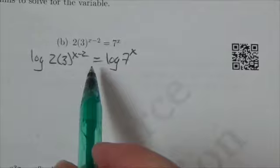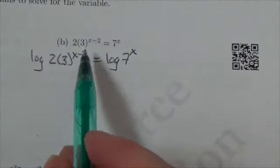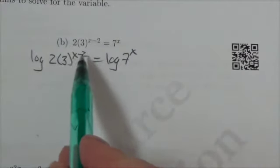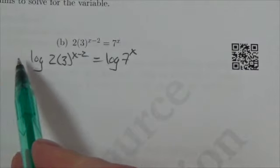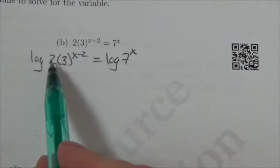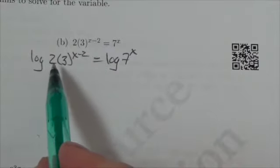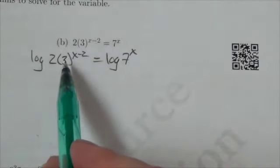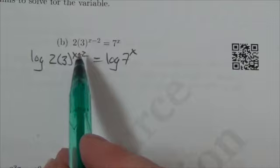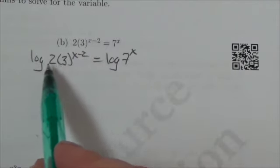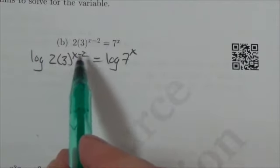Now the mistake that almost always happens here is people will immediately try to take that exponent out front, but the problem with that is the 2 here isn't in the base of that exponential. The 2 is multiplied in front of that thing. Remember, order of operation states that I can't multiply the 2 and the 3 together to get a new base to the exponential.